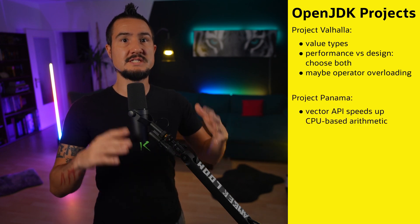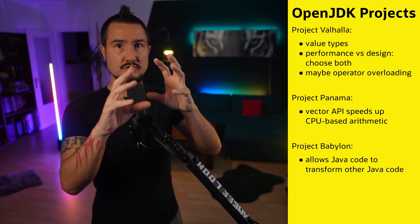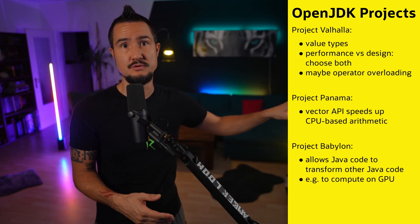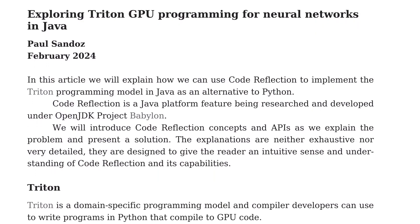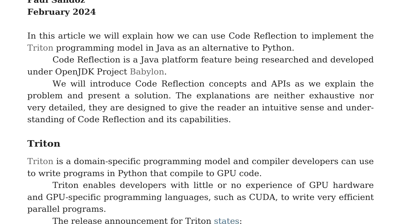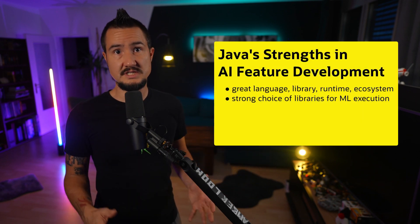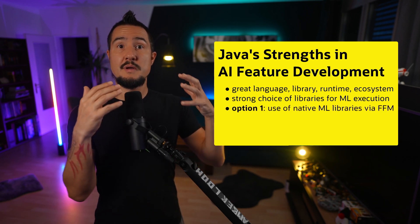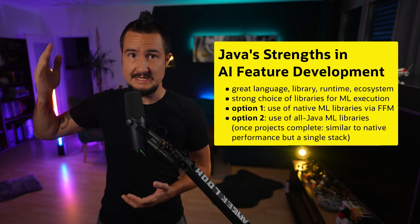Then there's Panama's Vector API, which can speed up CPU-based computations dramatically. And finally, and most directly aimed at AI, there's Project Babylon. Its goal is to allow Java code to parse other Java code and derive new code that could either be a different Java program or any kind of foreign code — in this context, specifically code that can be executed by GPU. I strongly recommend Inside Java Newscast number 58 for a primer on Project Babylon. As part of his work on the project, its lead Paul Sandoz explored how to implement Triton — a domain-specific Python platform for GPU computation — in pure Java, and got really good results. So the Java ecosystem for executing machine learning models is already pretty strong, and Valhalla's value types, Panama's FFM and Vector APIs, and Babylon's code reflection will only strengthen it further, whether by better integrating with native code or by enabling pure Java implementations with similar performance, giving products the benefit of using just one stack for the entire system.